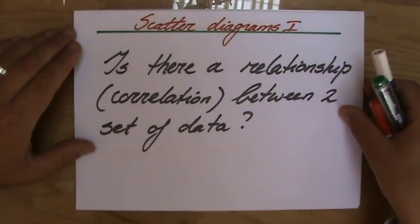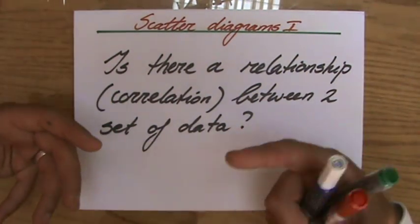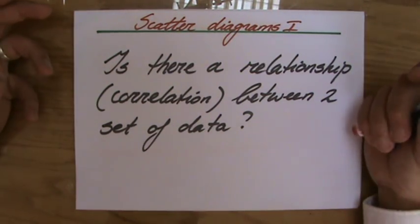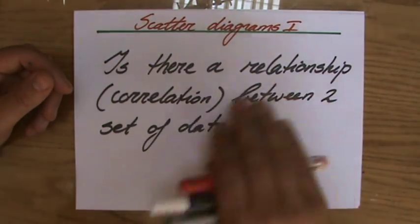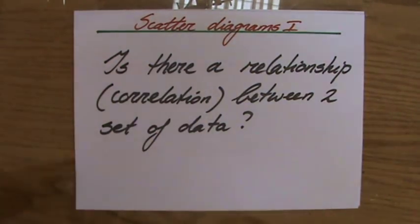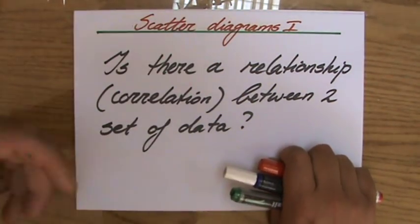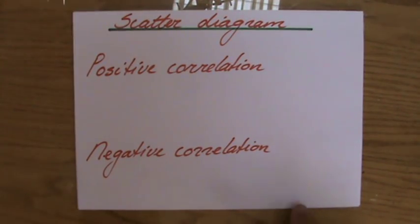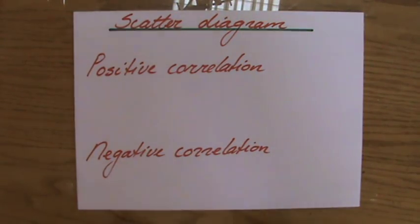First of all, it's important to realize that a scatter diagram tries to see if there's a particular relationship between two sets of data, between two variables. And a relationship is also sometimes called correlation. Is there correlation between X and Y? You have two types of correlation: positive correlation or positive relationship, or a negative relationship.